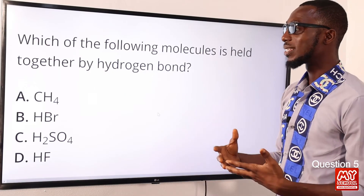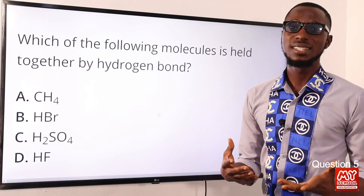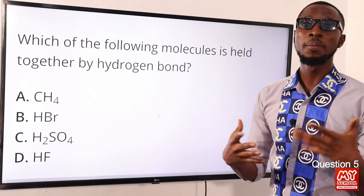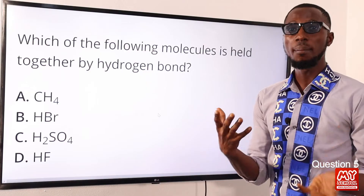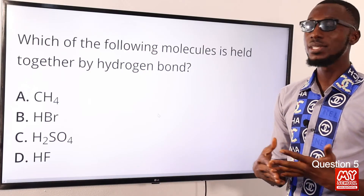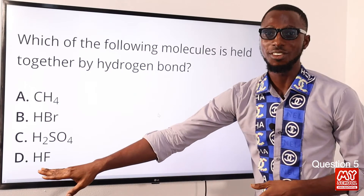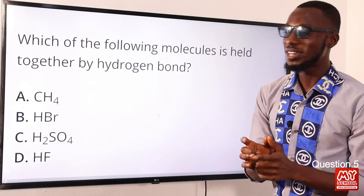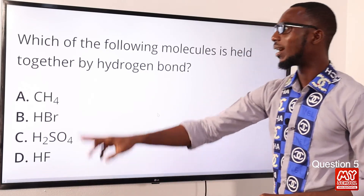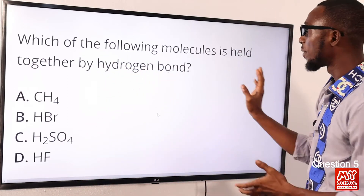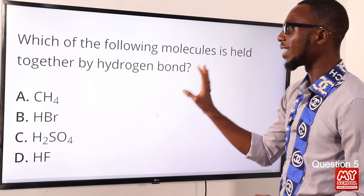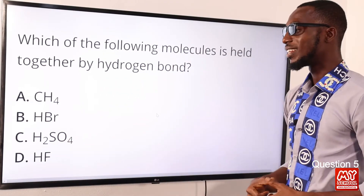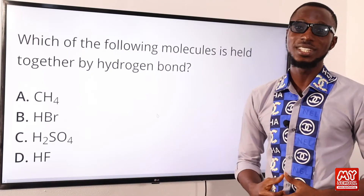The unusual high boiling point that we notice in water, ammonia, and HF is due to hydrogen bonding. So the correct option we are looking for is option D — which of the following molecules is held together by hydrogen bonds. The correct option is option D.